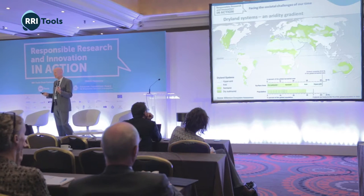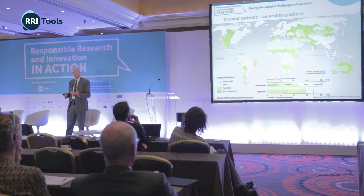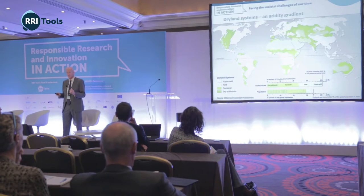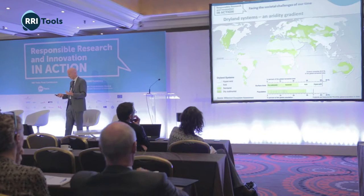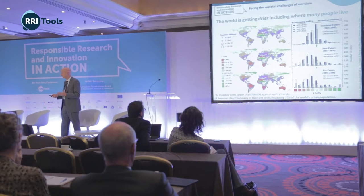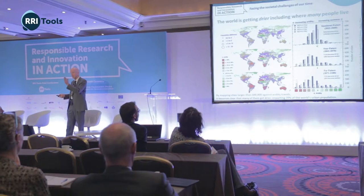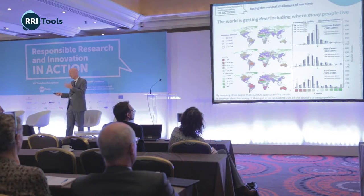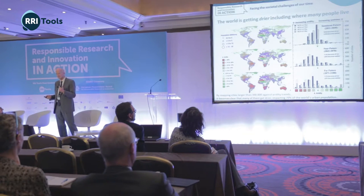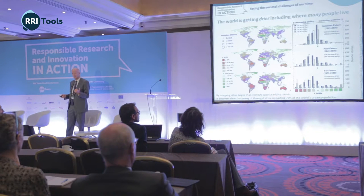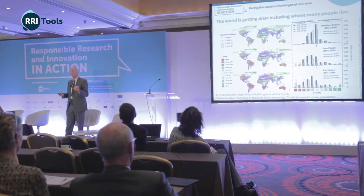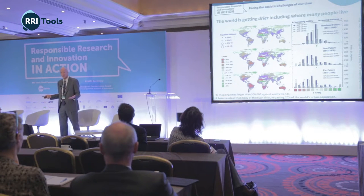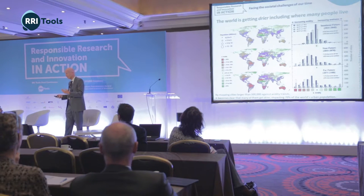A lot of the world is arid — maybe 30 to 35% — and a lot of people live in those areas, a larger portion of whom are poor than in non-arid areas. It's very sensitive to climate change and land degradation. Looking at the graphs on the right, cities on the left of the zero are cities that aren't arid today but will be in the future. That represents 70% of the world's urban population, and the urban population is growing — a huge impact that needs to be considered in terms of telecoupling.